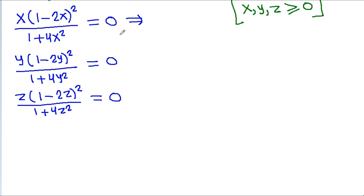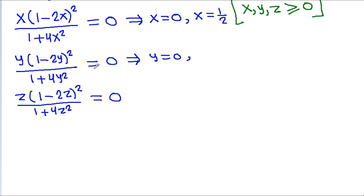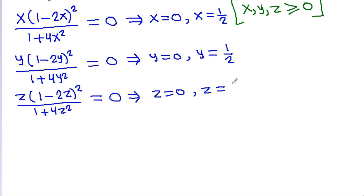So either x = 0, or (1 − 2x) = 0 which gives x = 1/2. Similarly, either y = 0 or y = 1/2, and either g = 0 or g = 1/2.